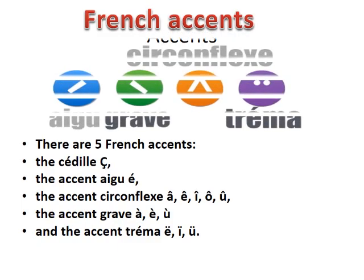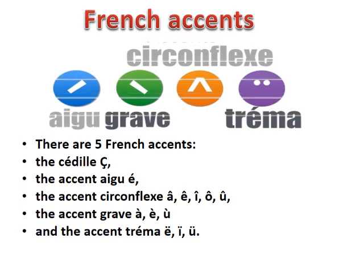French accents. Accents are used in place of vowels and they change the pronunciation of words. The first one is Accent Aigu, then Grave, Circonflexe, Tréma, and one more — Cedille. So there are 5 French accents.